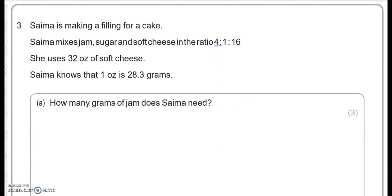Saima is making the filling for a cake. Saima mixes jam, sugar and soft cheese in the ratio 4 to 1 to 16. She uses 32 ounces of soft cheese. Saima knows that one ounce is 28.3 grams. How many grams of jam does Saima need? So first of all we're going to rewrite the ratio: the 4 is for jam, 1 is for sugar and 16 is for soft cheese. So 32 ounces of soft cheese, so I'm going to put that under soft cheese. And we are actually interested in jam, the amount of jam. So what we're going to do is we're going to keep it as ounces first and then we're going to convert into grams because we need to write the answer in grams.